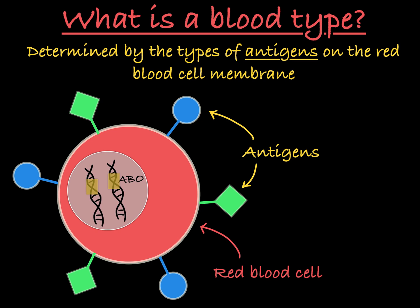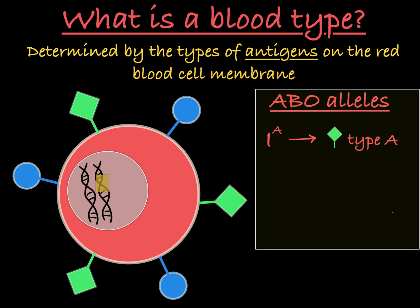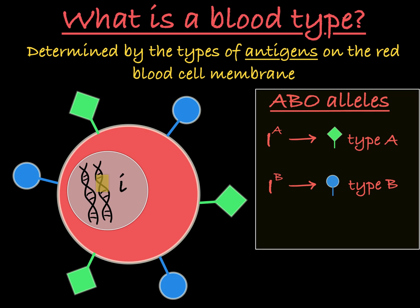The ABO gene encodes an enzyme responsible for building these antigens that sit on the membrane of the red blood cell. There are three common alleles of this ABO gene. The IA allele encodes an enzyme that builds type A antigens for the red blood cell. The IB allele encodes a slightly different enzyme that builds type B antigens for the red blood cell. And the little i allele does not produce a functional enzyme and therefore does not contribute to the antigens on the outside of the red blood cell.